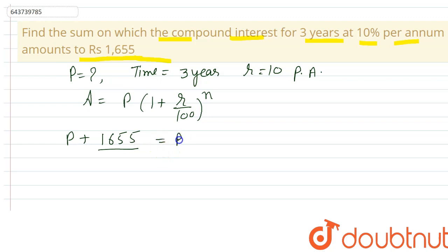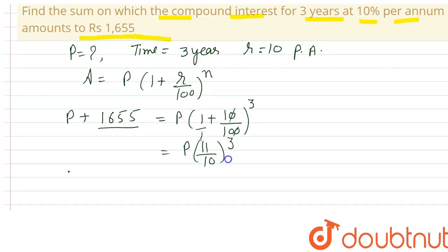Let's simplify this. While taking LCM, it will be (11/10)^3. So P + 1655 equals P times (11/10)^3, which equals P times (1331/1000).